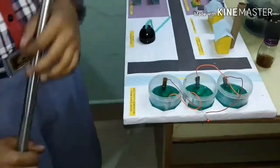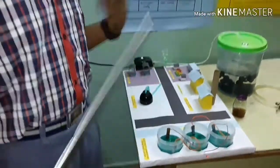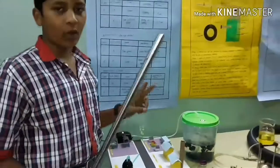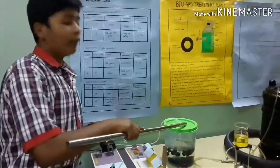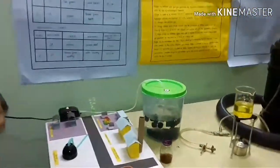After the generation of electricity, it can be stored and used for further usage. Now we have the second model which is making of fertilizer from urine.